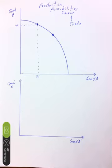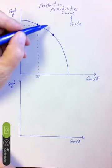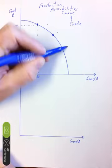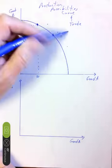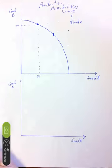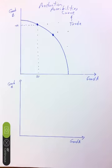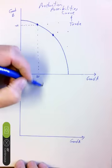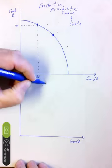Every point on the line represents a combination of A and B that we can achieve. Any points out here represent combinations of A and B that we cannot achieve because we're constrained by our factors of production or our technology. So that's all review from chapter 2. Now down here I want to plot out for you the trade line.